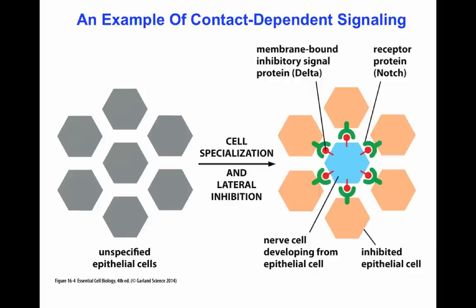Let me give you an example of contact-dependent signaling. Here we have unspecified epithelial cells that will go through cell specialization and lateral inhibition. The cell in the middle begins to express a molecule called Delta — a membrane-bound inhibitory protein. The surrounding cells express a different protein: the Notch receptor. The cell in the middle gives a cell-to-cell signal to surrounding cells containing the Notch receptor. The middle cell develops into a nerve cell, while the outer cells become inhibited epithelial cells, preventing further neuron development around it.